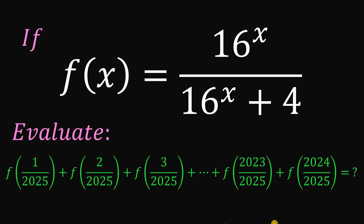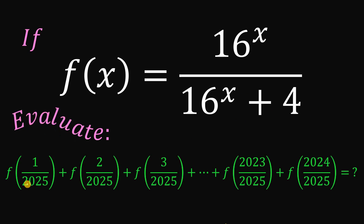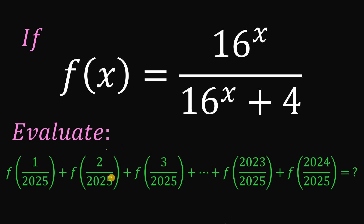Today we will answer a question from PHIMO. If f of x equals 16 raised to the power of x over 16 raised to the power of x plus 4, then what is the value of the expression f of 1 over 2025 plus f of 2 over 2025 plus f of 3 over 2025 all the way down to f of 2024 over 2025? You can pause this video if you want to give this problem a try.